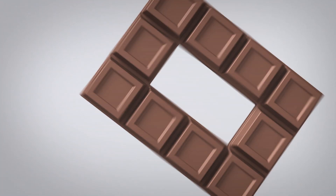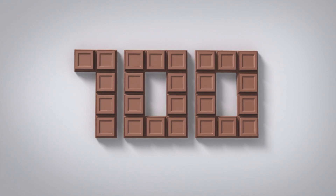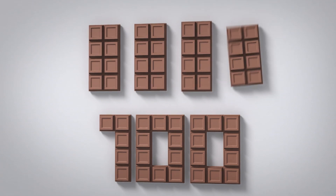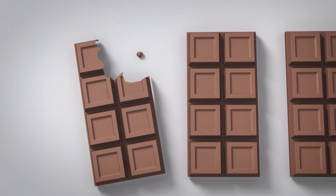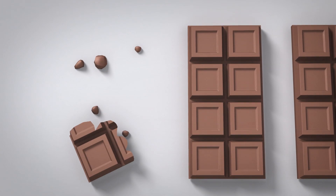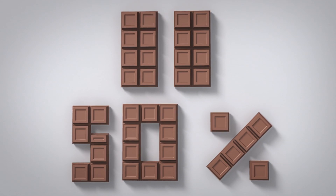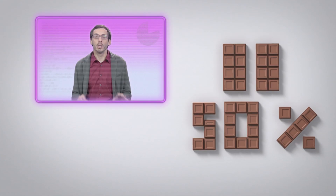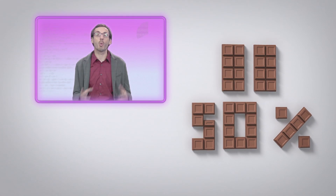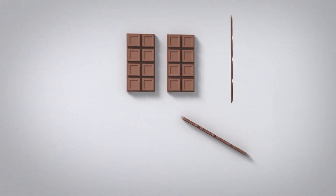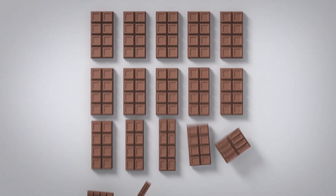Devi pensare alla percentuale come a una frazione in base a 100. Per esempio tu hai 4 barrette di cioccolata e ne regali 2 ai tuoi amici. È come se quelle 4 valessero 100 e quindi hai regalato il 50%. Quindi 2 barrette di cioccolato sono il 50% di 4 barrette di cioccolato. Ma se io avessi 20 barrette di cioccolato cambierebbe tutto.